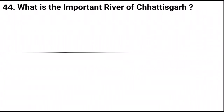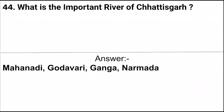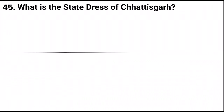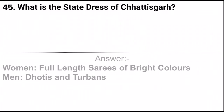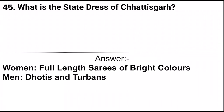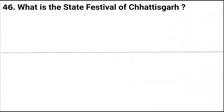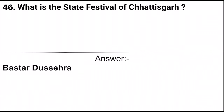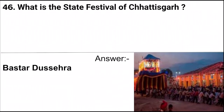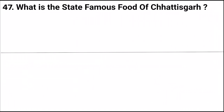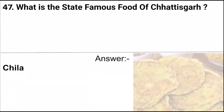Next question: What are the important rivers of Chhattisgarh? Answer: Mahanadi, Godavari, Ganga, and Narmada. Next question: What is the state traditional dress of Chhattisgarh? Answer: Full-length sarees of bright colors for women, and dhotis and turbans for men. Next question: What is the state festival of Chhattisgarh? Next question: What is the famous food of Chhattisgarh? Answer: Chila.